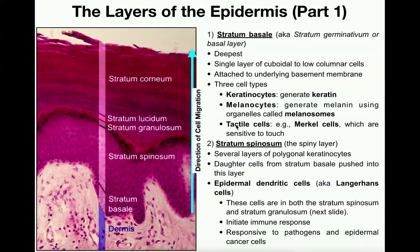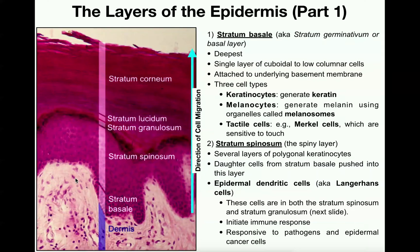Third, we have cells called tactile cells, and an example of these are Merkel cells. These are cells that are sensitive to touch. If you apply enough pressure to the skin to detect touch, tactile cells will transmit signals to sensory nerve endings located in the dermis, and then that information will be relayed to the central nervous system so that your brain can detect that you are being touched.